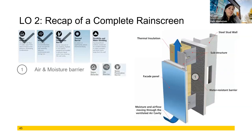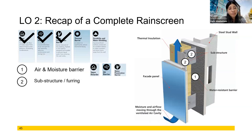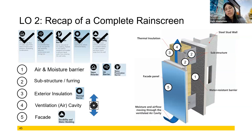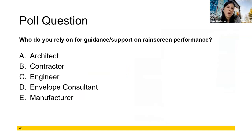To recap the system layers: we have our air and moisture barrier, our sub-construction, our outbound insulation, our vent cavity, and finally our facade. I promised you guys another poll question. I'm going to ask it slightly differently: who would you say has the final hammer stroke on a rain screen? Who's kind of driving that decision?